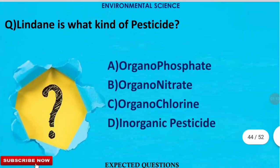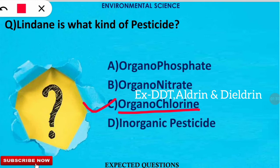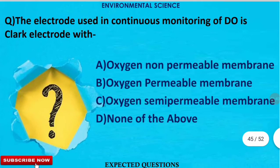The next question is: Lindane is what kind of pesticide? The correct option is C — Lindane is an organochlorine pesticide, which is part of hexachlorocyclohexane compounds. Other organochlorine pesticides include DDT, Aldrin, and Dieldrin.